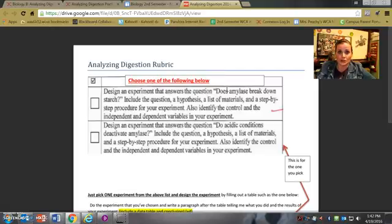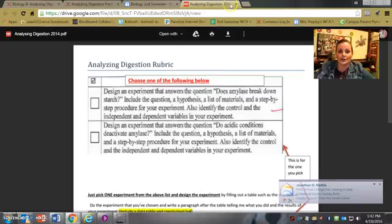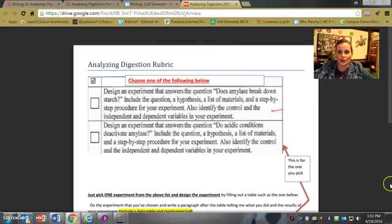Second experiment is do acidic conditions deactivate amylase? So the idea is if I add acid to the amylase it no longer works. So again what you need to do here is come up with a food that has starch in it. And you need to check to see if the acid is going to deactivate the amylase. So what you can do is you can actually take your cracker again and you can just maybe pour some vinegar on it and then put a little iodine on there and see if it changes color. If it changes to purple then you'll know that there's still starch present in it.